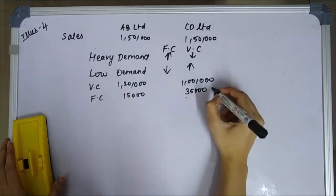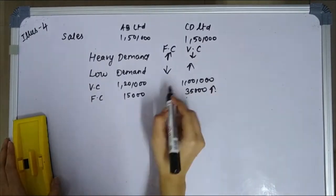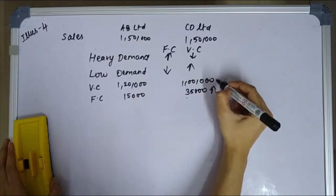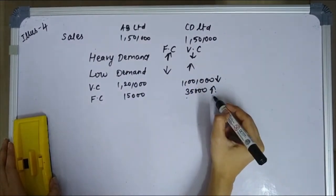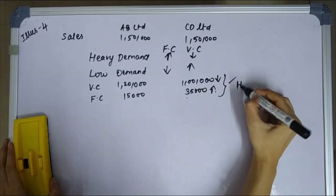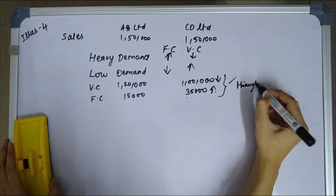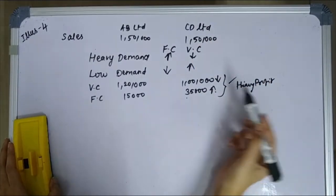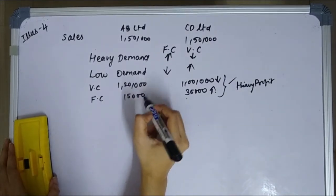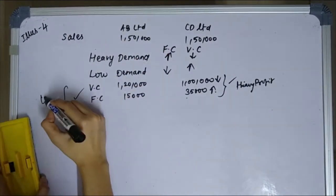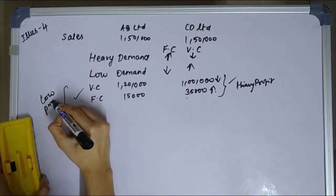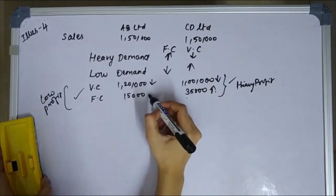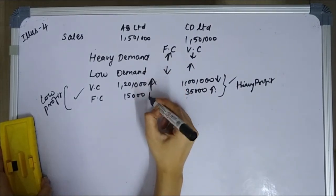Variable cost is higher here, fixed cost is lower. Fixed cost is higher there. When variable cost is higher and fixed cost is lower, under heavy demand profits will be higher. Under low demand, lower profits.